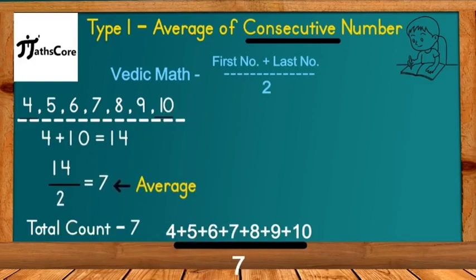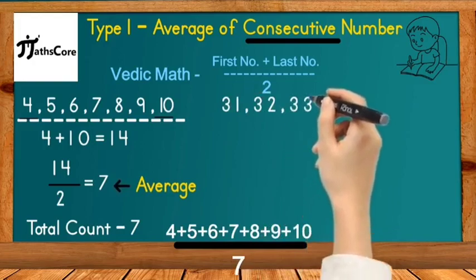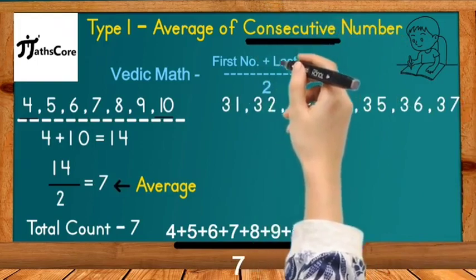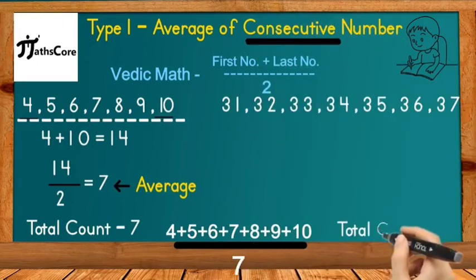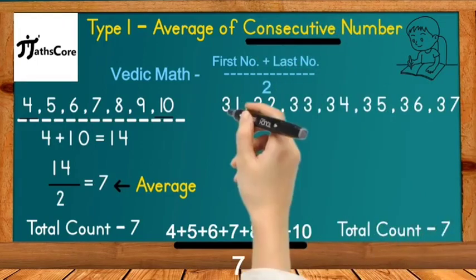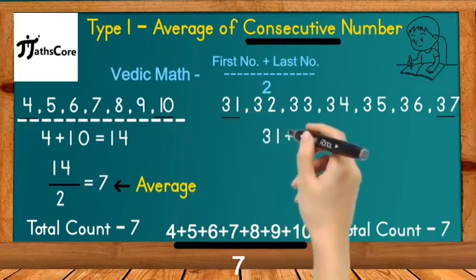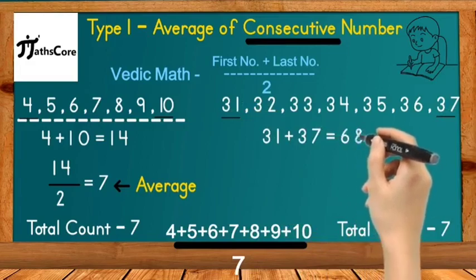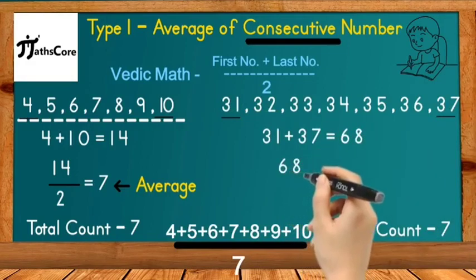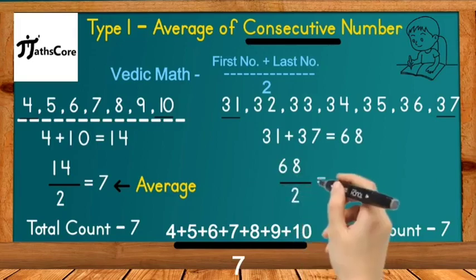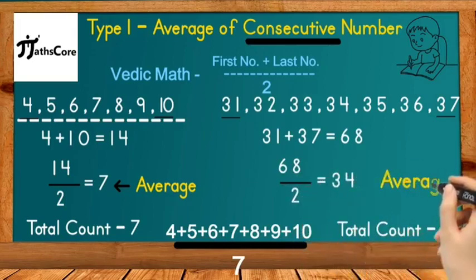Second example is 31, 32, 33, 34, 35, 36, 37. In this example also all numbers are consecutive and exactly 7 numbers are given. So by using the Vedic math technique, we need to add first and last number together. First number is 31 and last number is 37. 31 plus 37 is equal to 68. Now divide 68 by 2. 68 divided by 2 is equal to 34, and this is the average of all these numbers. In this way you can find out the average of all consecutive numbers within a few seconds.